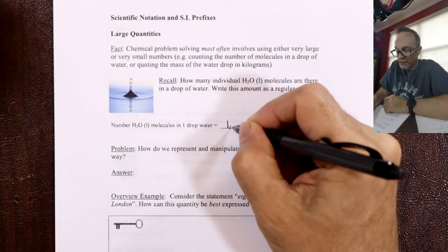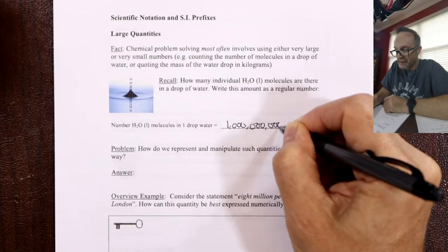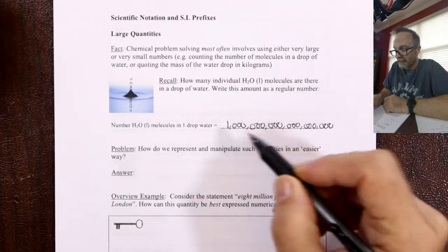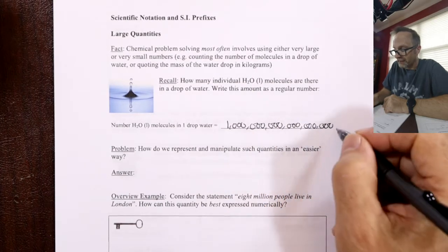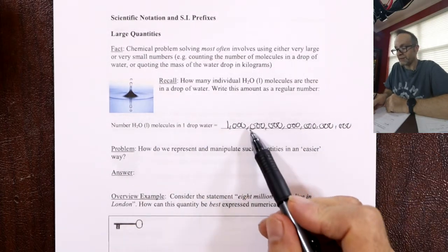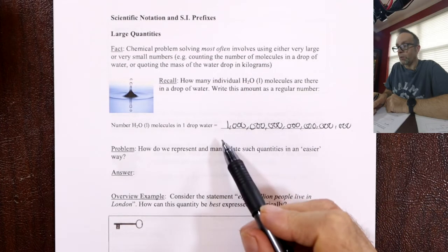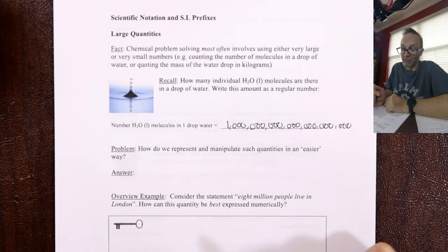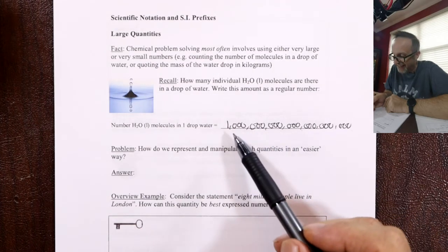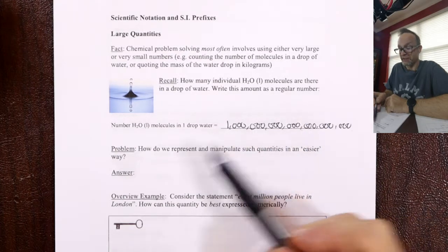In one drop of water, there is a 1 with 21 zeros — a thousand billion billion molecules in one drop. If you have a simple calculator, try and get that number on the screen. Well, you get to 10 digits and you run out of space. On a more expensive calculator you could squeeze it on, but it's a problem. We've got to be able to get numbers like this on a small screen.